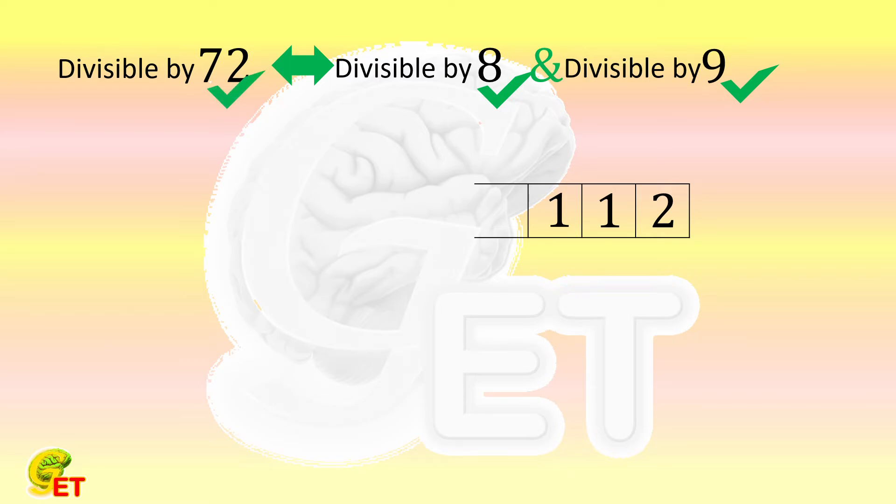Now, the summation of the last three digits is 4. Then the summation of all the other digits is 72 minus 4, which equals 68.